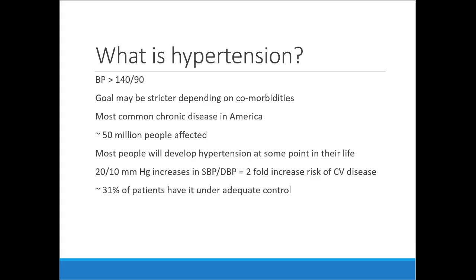What's the definition of hypertension? Blood pressure has to be over 140 over 90. It is the most common chronic disease in America, and about 50 million people are thought to have hypertension. Most people develop hypertension at some point in their lifetime — it's thought of as a disease you eventually get with advanced age, but it can affect people of all different types. Pregnant women are at slightly higher risk due to the hormonal and hemodynamic changes that accompany pregnancy, so it's something you'll likely encounter fairly frequently in your career.